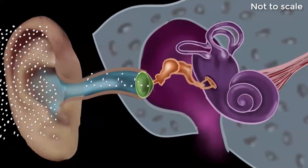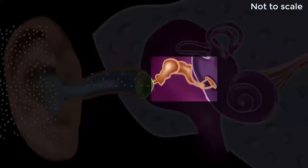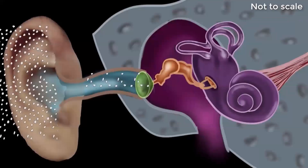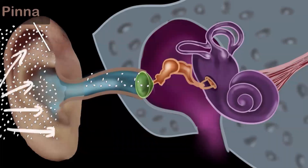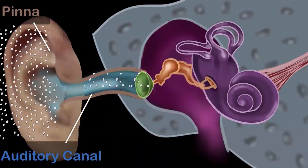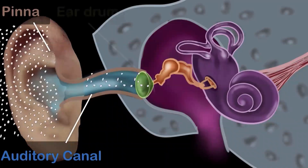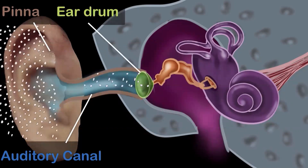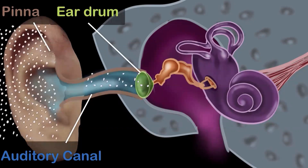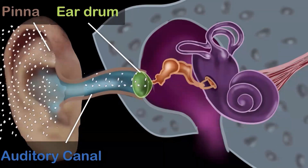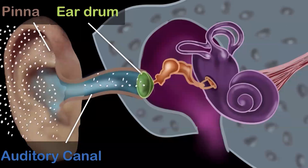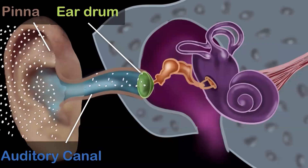The ear can be divided into three parts: the outer ear, the middle ear, and the inner ear. The outer ear starts with the pinna — the part you can see and touch. Its job is to collect as much sound waves as possible and channel them into the auditory canal. The sound waves pass through the auditory canal and eventually meet the eardrum, which is a transparent membrane super sensitive to air vibrations. The eardrum also separates the outer ear from the middle ear.